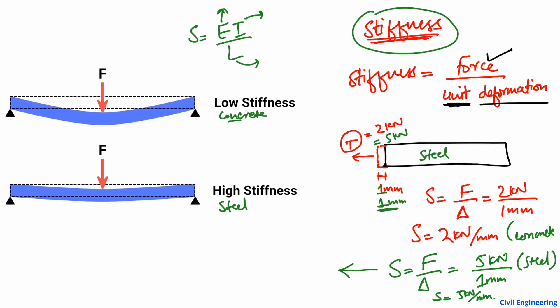If I increase the elasticity of the material, the stiffness increases — they are directly proportional. Similarly, if the moment of inertia is higher, the stiffness is also higher. However, when the length is greater, the stiffness will be lower because length and stiffness are inversely proportional. So these are the three factors affecting the stiffness of an object.